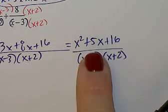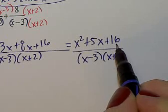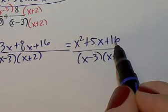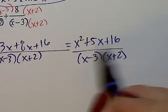Is this factorable? Can we come up with two numbers that multiply to give us 16, and combine to give you a positive 5? 1 and 16, no. 4 and 4, no. 8 and 2, no. This is your final answer.